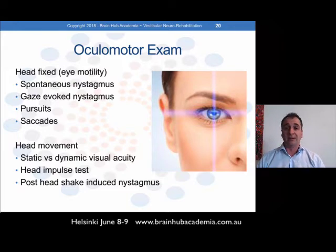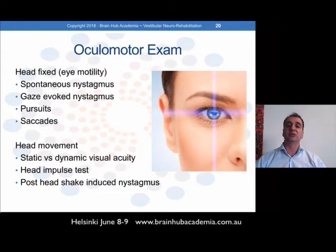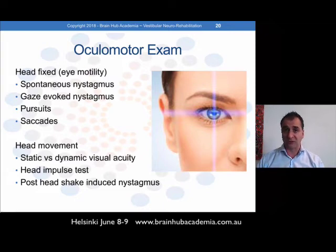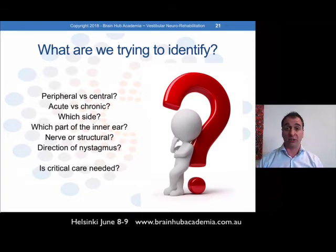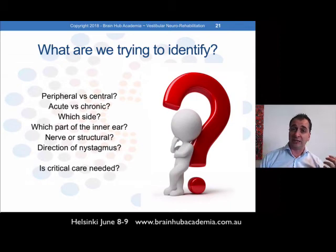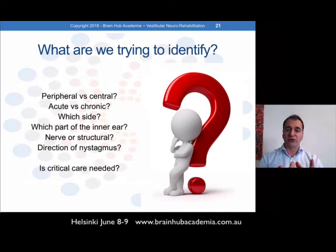We'll then move into vestibular-based assessments including dynamic and static visual acuity, the vestibulo-ocular reflex — which is what my PhD is all about — and post-head-shake nystagmus as tools for ocular motor assessment. We'll break these down, discuss their efficacy, explain how to perform them, and do practicals. You'll walk away knowing what each test means, how valid it is, when to use it, and how to do it properly. The goal is to ascertain whether a lesion is peripheral or central, since management — both acutely and chronically — depends on that, as does whether the issue is acute or chronic, which side is affected, which part of the inner ear, whether it's neurological or structural, the direction of nystagmus, and whether critical care is required.